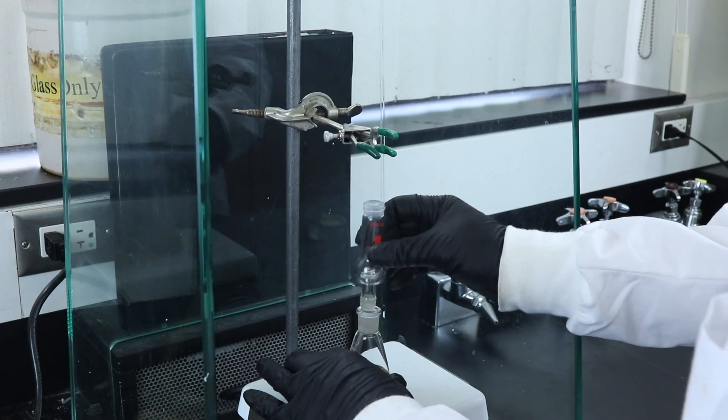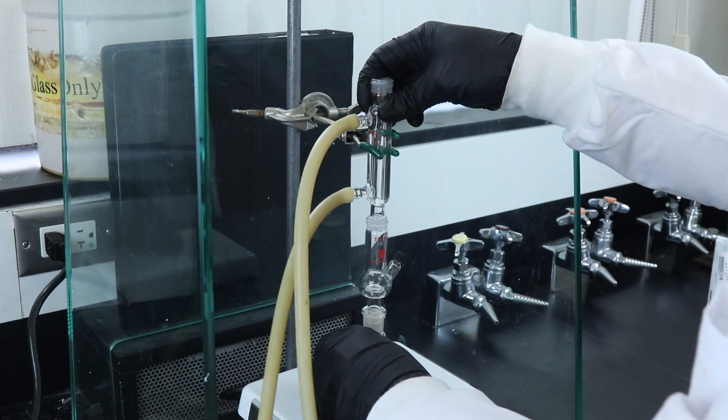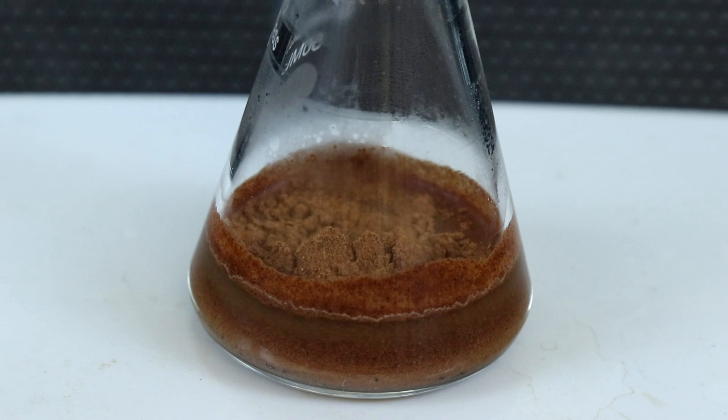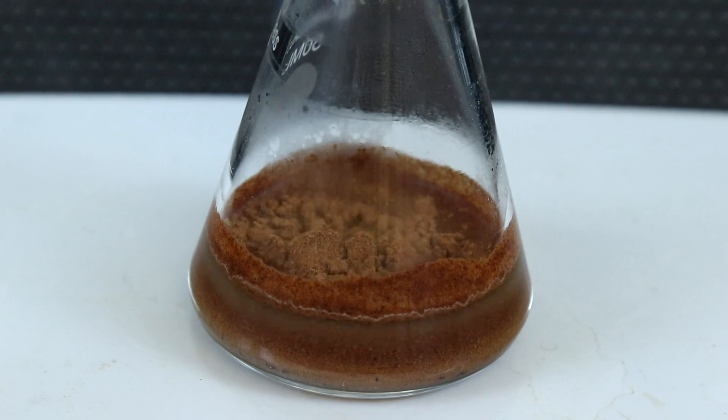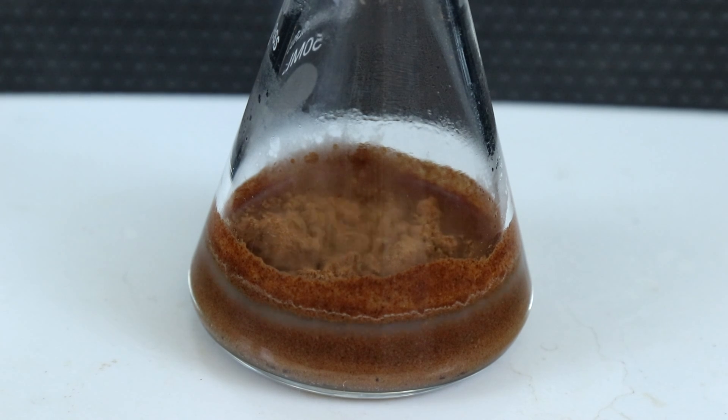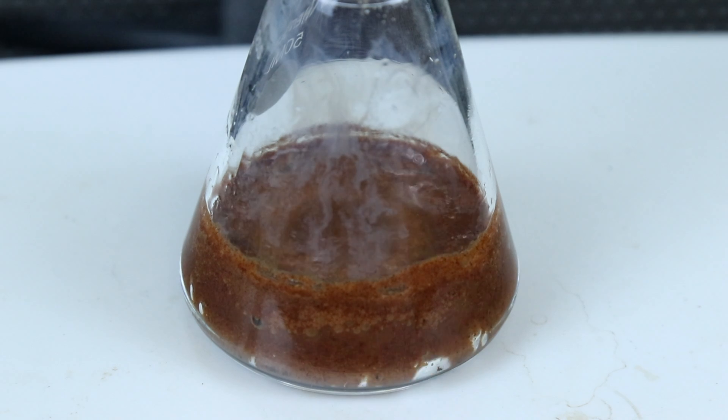Now I'll set up the apparatus attaching the Hickman still and a water condenser on top of the Erlenmeyer flask and then start heating things up. As it does warm up you can actually start to see the milky distillate in the cinnamon, and as that begins to boil we're going to see that a lot more on the sides of the flask.